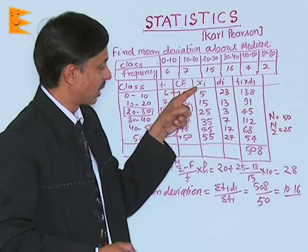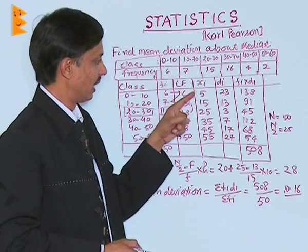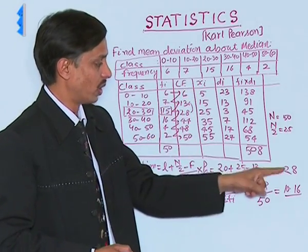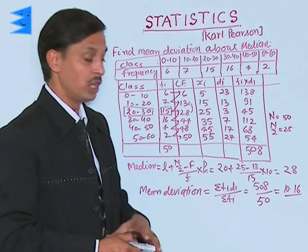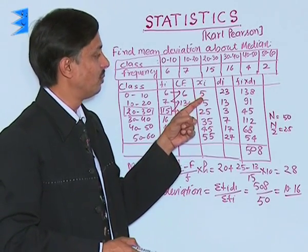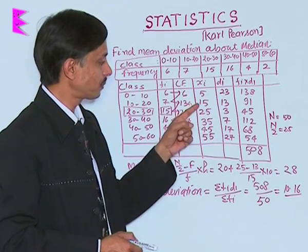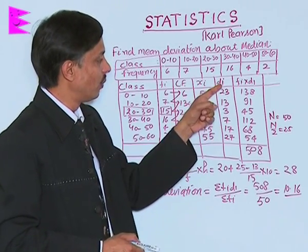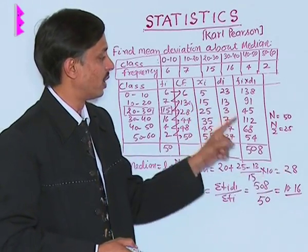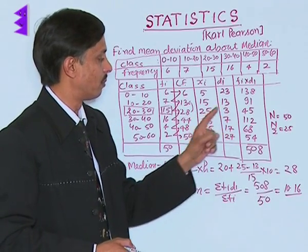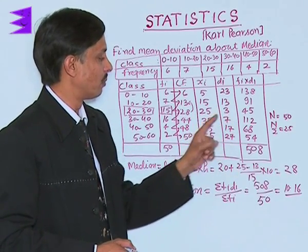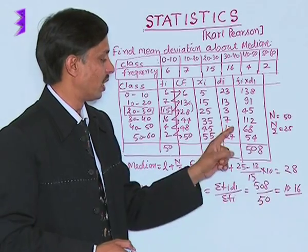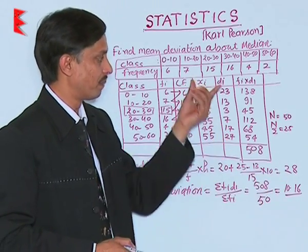This 28 will be subtracted from each of the xi. 5 minus 28 results in minus 23, but deviation is always mod, so this becomes 23. Now similarly we have obtained 15 minus 28 mod, 25 minus 28 mod, 35 minus 28 mod, 45 minus 28 mod, 55 minus 28 mod. These are Di.